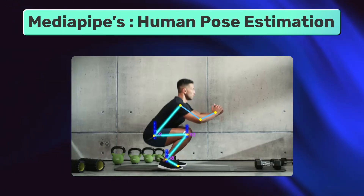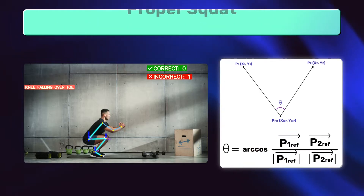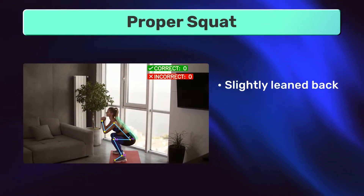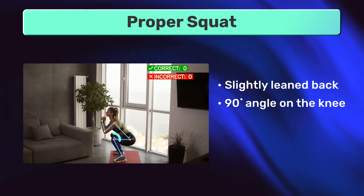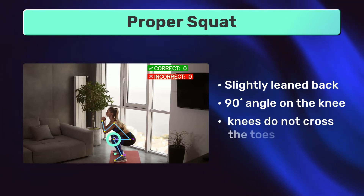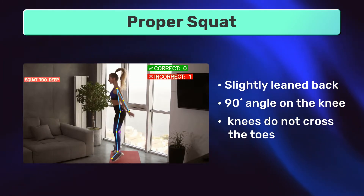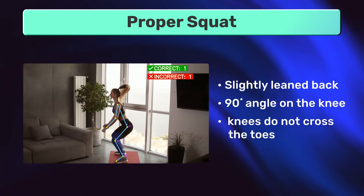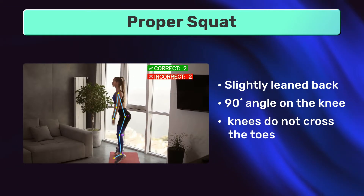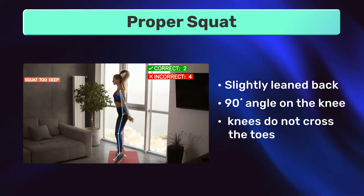The formula to calculate the angle between two lines is given by this. A proper squat involves maintaining a slightly lean back, 90-degree angle on the knees, and ensuring that the knees do not cross over the toes. This becomes our logic: a slightly leaned back, adequate depth, and knee alignment. We assume that the camera is positioned on the side and not head-on.